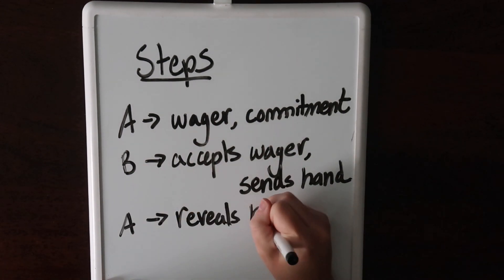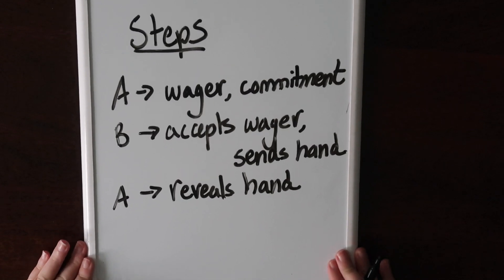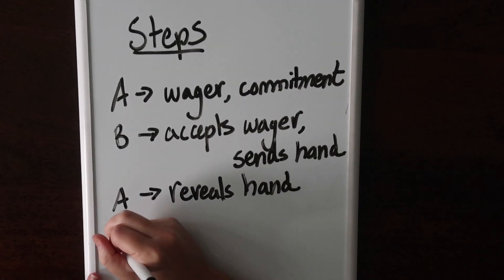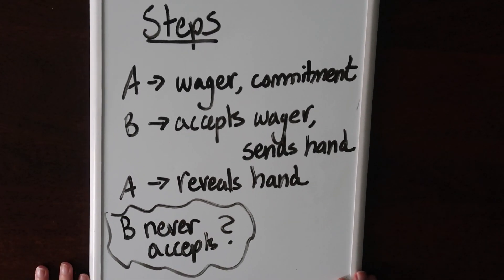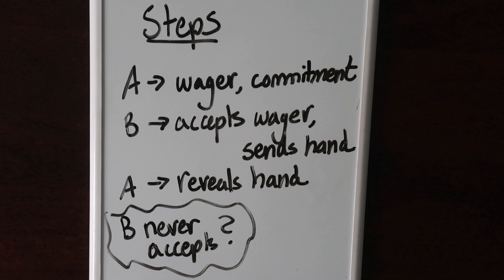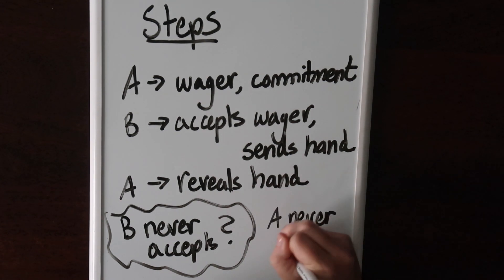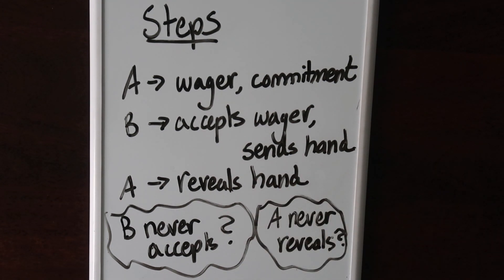For example, consider what happens in our game if Alice pays her wager but Bob never accepts it. The application doesn't continue. In this case, Alice's network tokens would be locked inside the contract and lost to her. Similarly, if Bob accepted and paid his wager, Alice could stop participating and never submit her hand. With this case, both of their funds would be locked away forever.